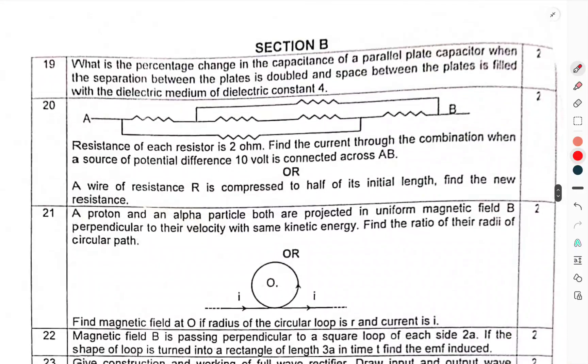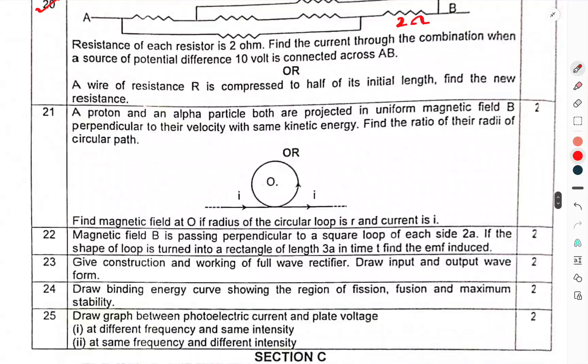Now we have come to section B. Question 19: What is the percentage change in the capacitance of a parallel plate capacitor when the separation between the plates is doubled and the space between the plates is filled with dielectric medium of constant 4? Question 20: Resistance of each resistor is 2 ohm. Find the current through the combination when a source of potential difference 10 volt is connected across AB. Or, a wire of resistance R is compressed to half of its initial length, find the new resistance.